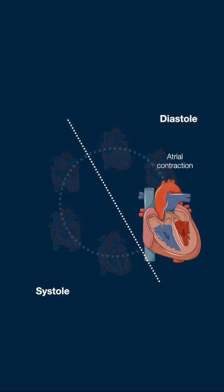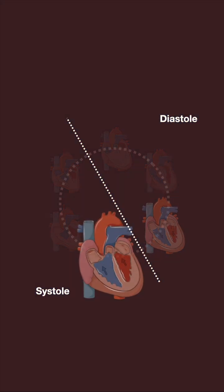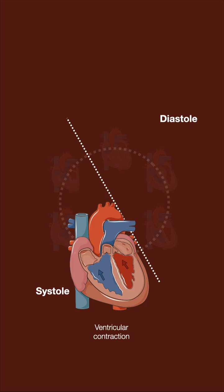During atrial systole, the atria contract, filling the ventricles with blood. Ventricular systole begins with isovolumetric contraction. As ventricular pressure exceeds atrial pressure, the atrioventricular valves close, producing the first heart sound, lub.